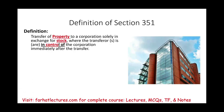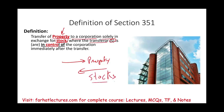So what is Section 351? It is the transfer of property to a corporation solely in exchange for stock, where the transferor or transferors are in control of the corporation immediately after the transfer. This means one or more individuals transfer property, the company issues stocks to them as ownership in the corporation, and right after the transfer, this group owns 80% or more of the company. That is control, and that makes it a Section 351 transaction.